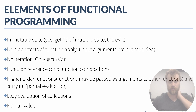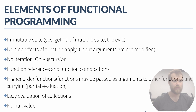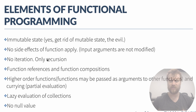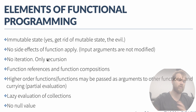This is called currying. The other thing is lazy evaluation of collections — you need to evaluate an item inside the collection only when you need it. The other thing is no null value. In functional programming there is no null concept because null is considered a great problem in software programming, and in the modern functional programming approach it is prohibited.